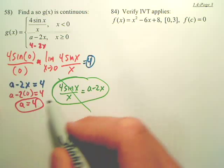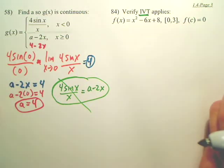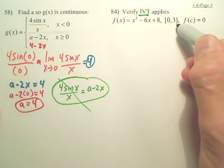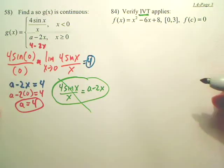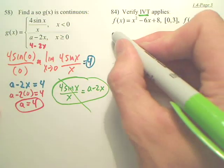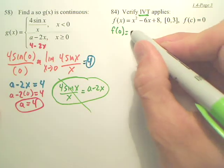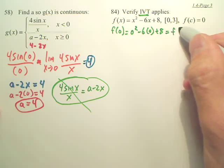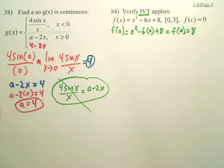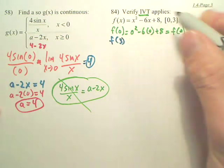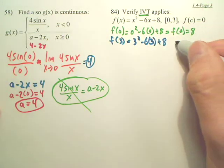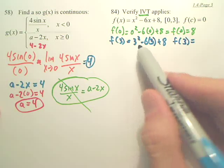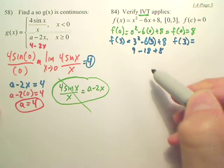And the last one — Intermediate Value Theorem. We want to see if it applies. This is a closed interval from 0 to 3, and it wants to know if there are any c values that will give an output of 0. We need to plug in 0 and 3. So when I plug 0 into f(x), I get 0 squared minus 6 times 0 plus 8, which gives f(0) equals 8. And for f(3), that's 3 squared minus 6 times 3 plus 8, which gives 9 minus 18 plus 8, so f(3) equals negative 1.